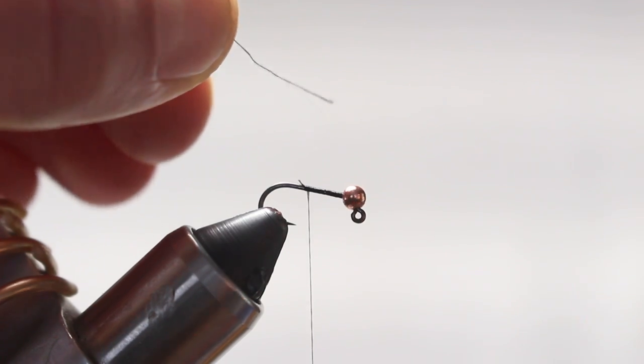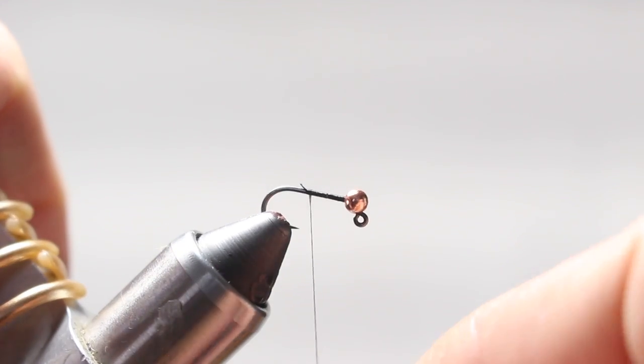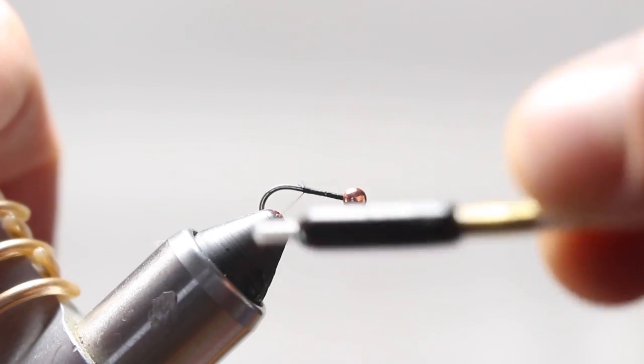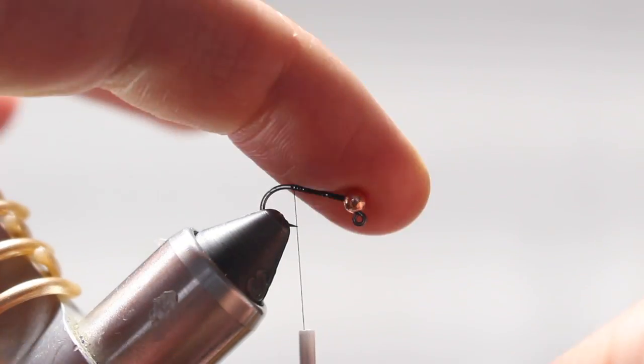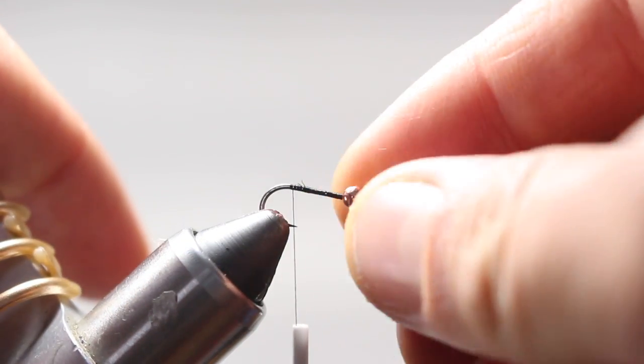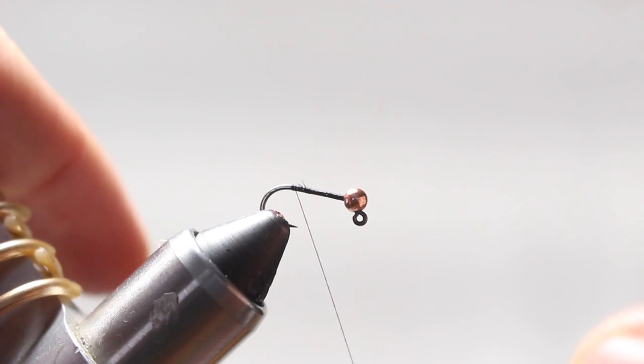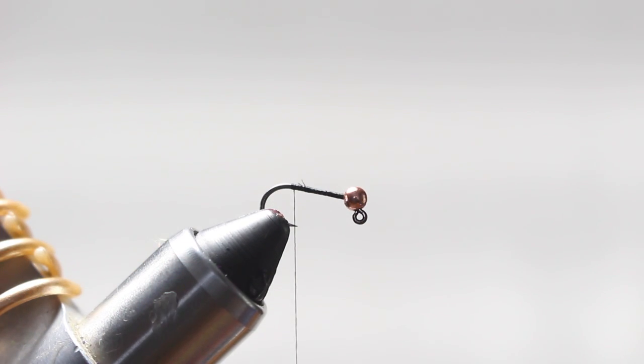You see I have some black uni-thread. I just started behind the bead and it can move around a little bit, I'm not too worried about that right now. It's 8/0, my favorite size.